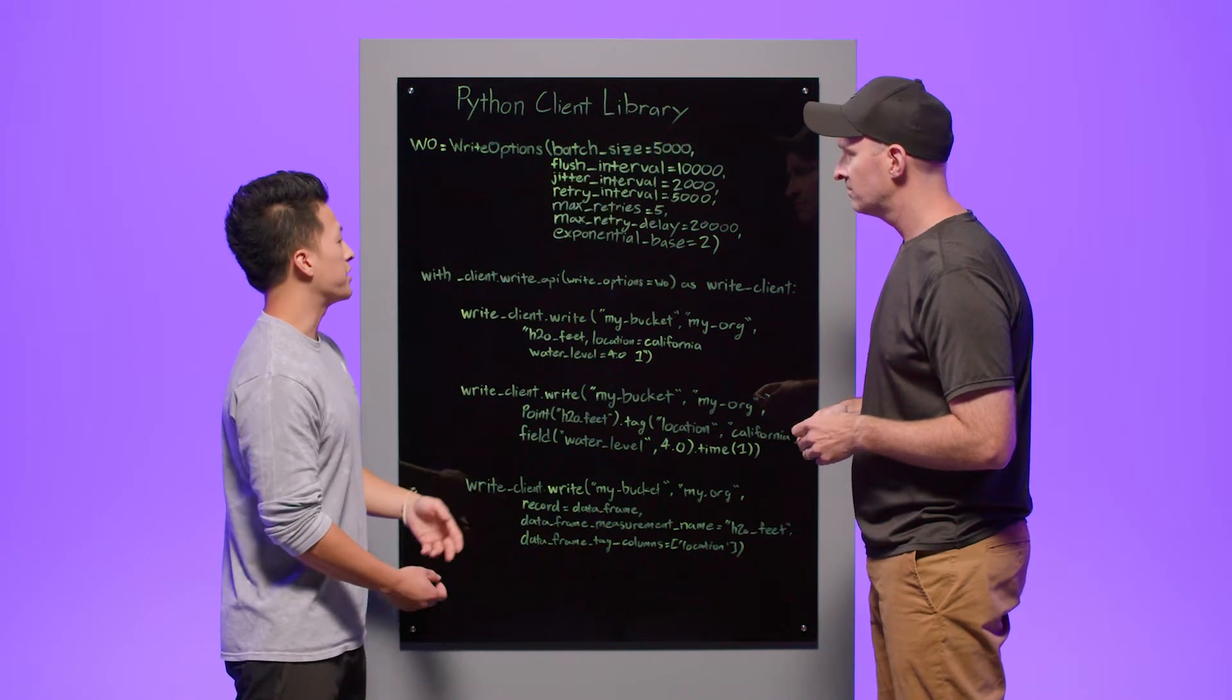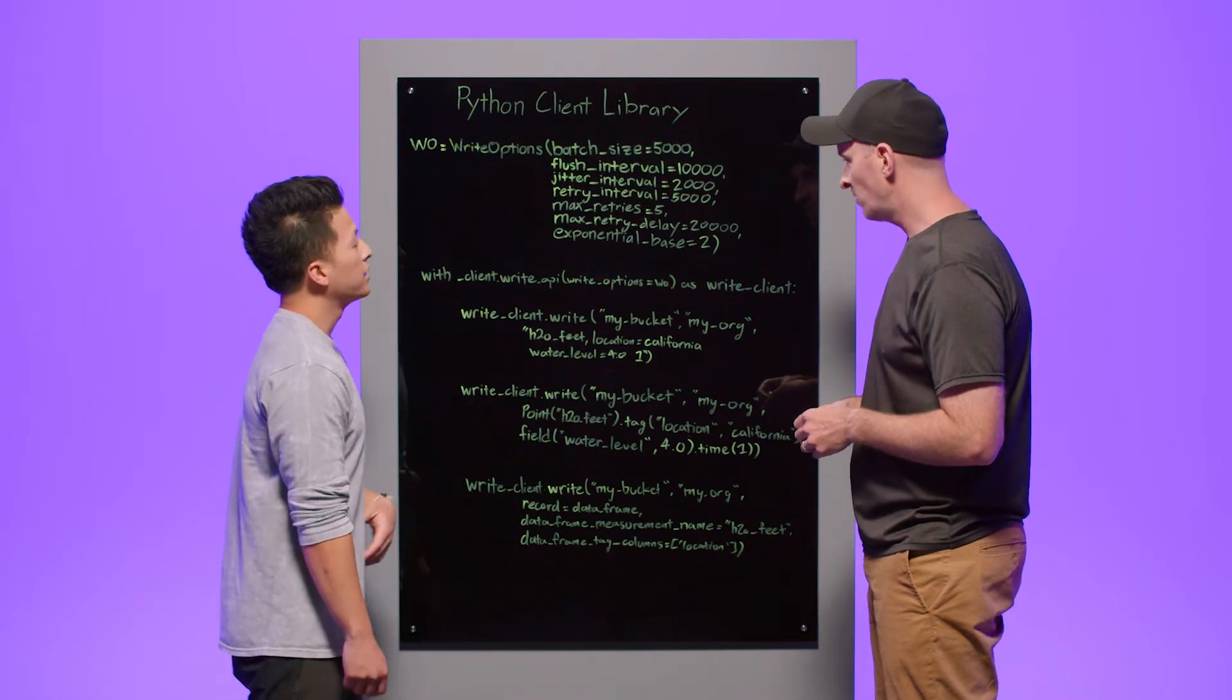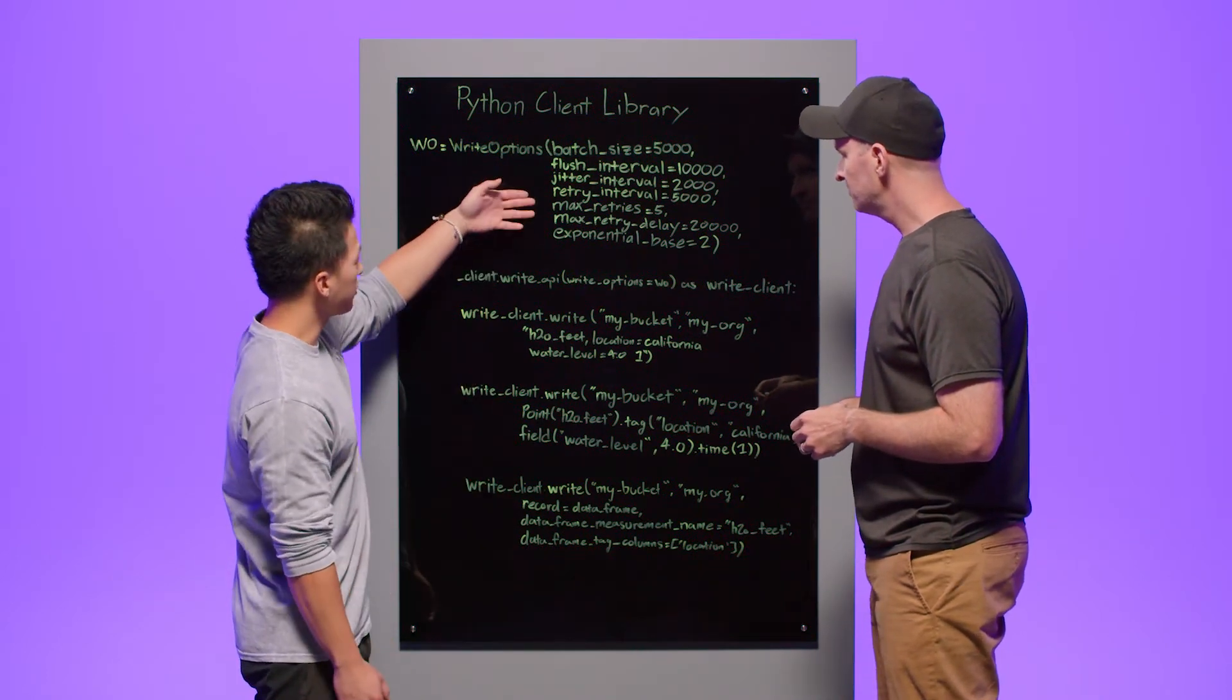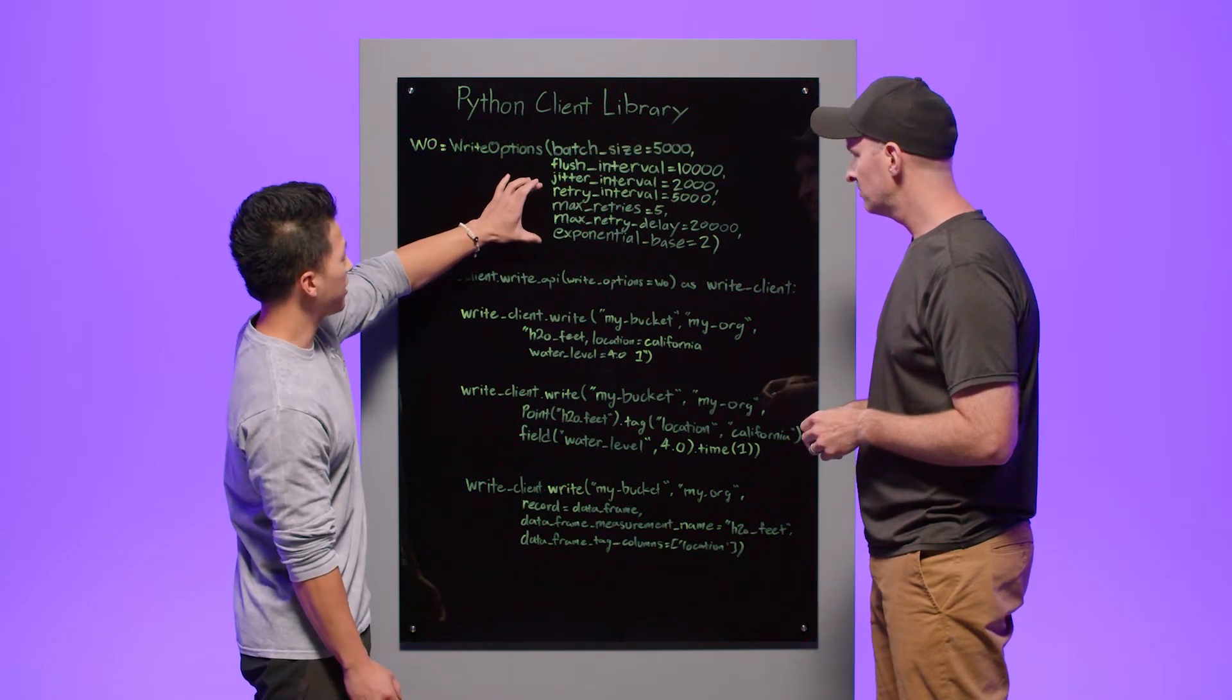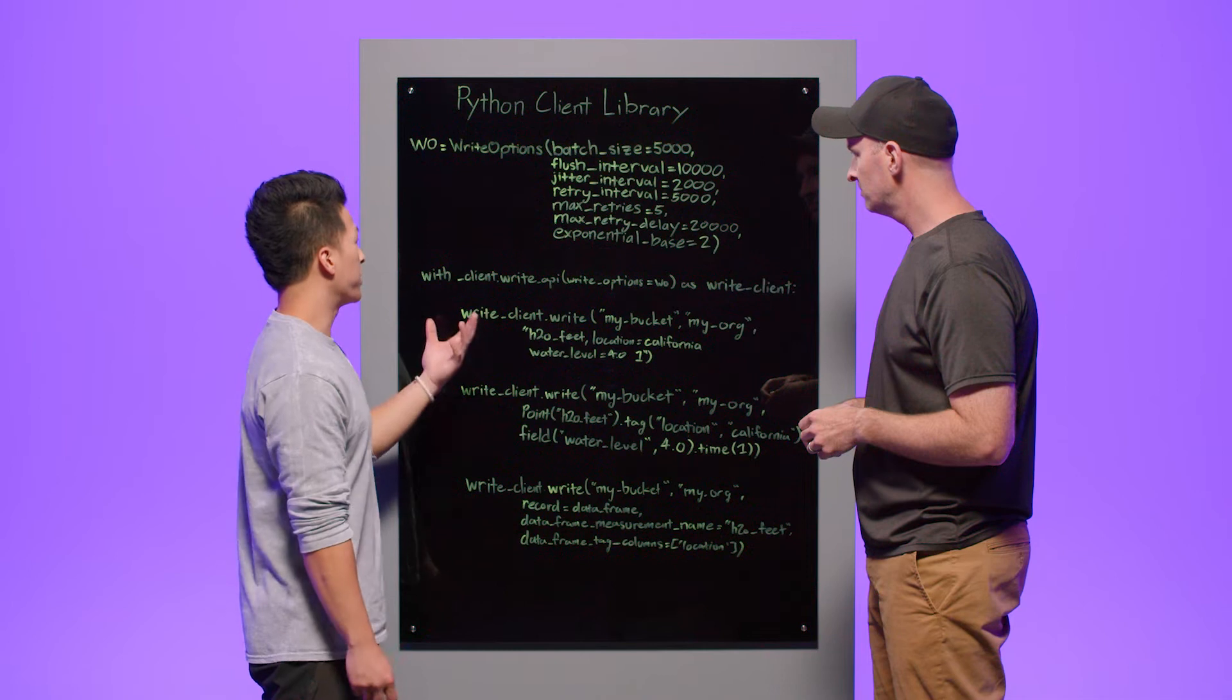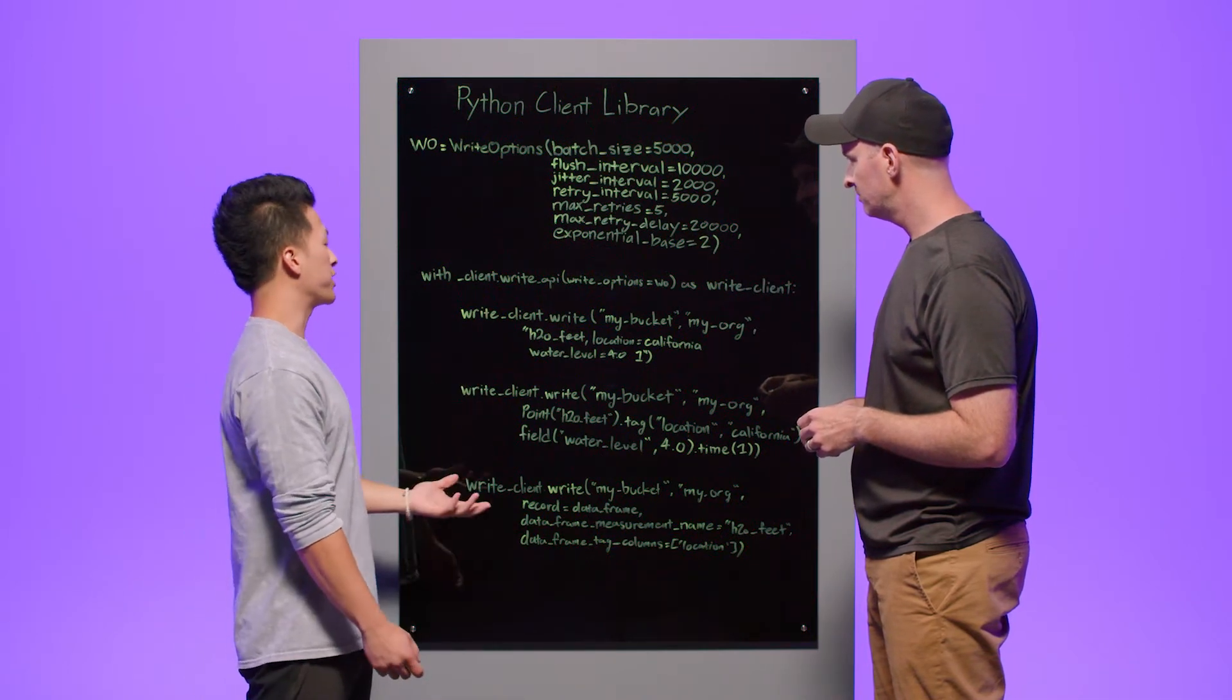That means that you can send up to 5,000 data points within one write request. Additionally, we have all these other options and we have a retry logic that's set up here for you to use. It includes things like max retries, retry interval, and an exponential base for your back off.